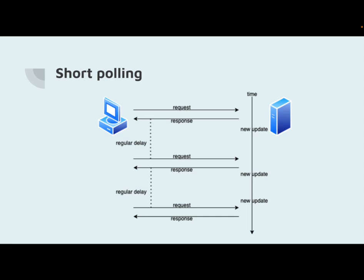Short-polling is a type of communication between a client and a server in which the client repeatedly sends requests to the server to check for updates. The client sends a request at regular intervals, asking for any updates or changes since the last request. The server responds immediately with any new information, and the client processes it and sends another request after a short interval. Requests are sent after a regular delay regardless of whether new updates appear on the server. Short-polling is implemented using an Ajax-based timer.